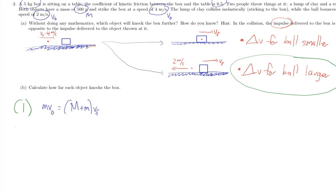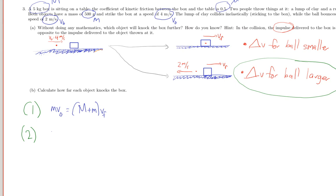But for number two, again, only the ball has momentum in the beginning, but this time they don't move together after the collision. The box is moving forward, but the ball is moving backwards.